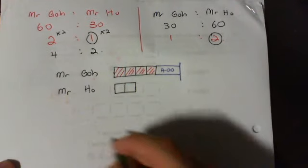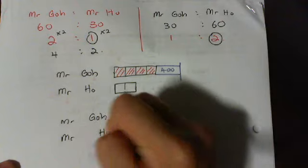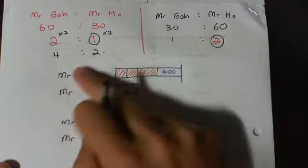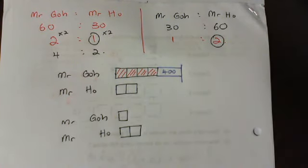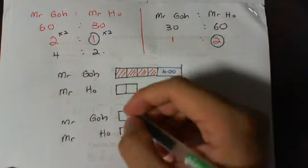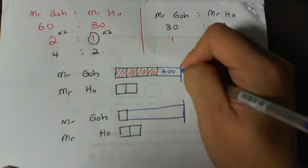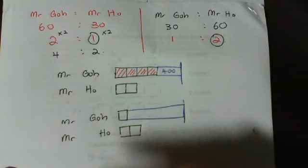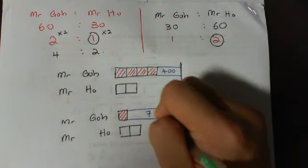Let's look at the second situation. In the second situation, Mr. Go and Mr. Ho — Mr. Go would sell 1 unit. Now, we can compare the units because we have made them the same. Mr. Ho would sell 2 units as per normal. But this time around, it's a bit different because Mr. Go would have 700 left. This amount and this amount should be the same, because this is the amount Mr. Go would have regardless of how much he has sold. So take away 1 unit, I know I have 700 left.